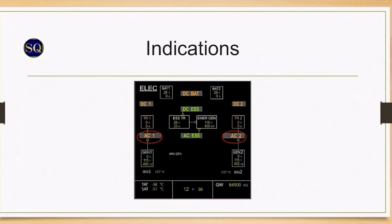The loss of AC bus 1 and 2 is an emergency situation and 'Land ASAP' in red will be displayed, signifying a critical situation. Land as soon as possible at the nearest suitable airport at which a safe landing can be made. A Mayday should be declared to ATC and all ECAM actions should be completed prior to an approach.